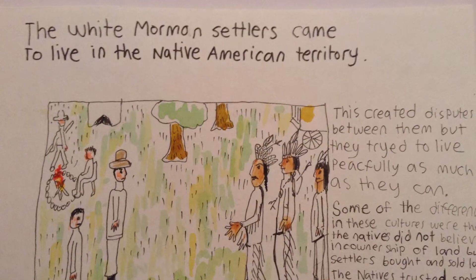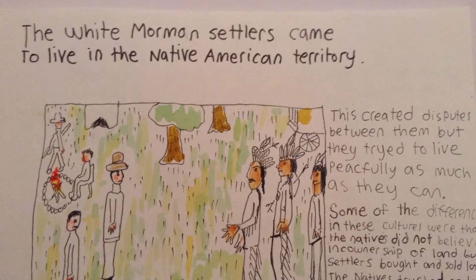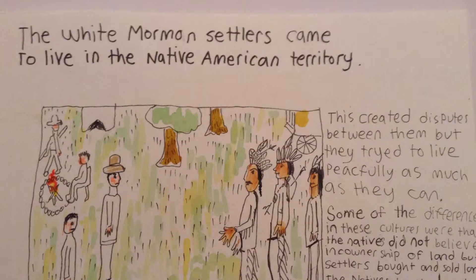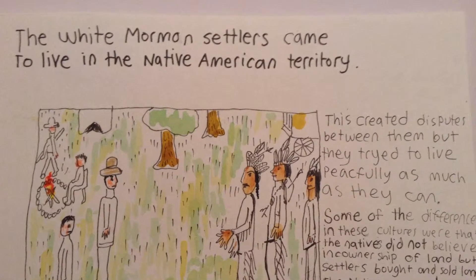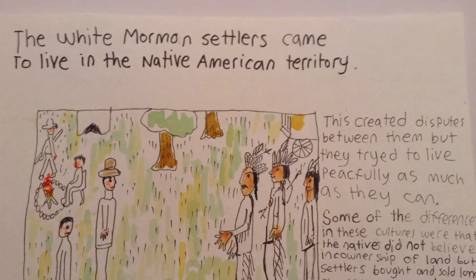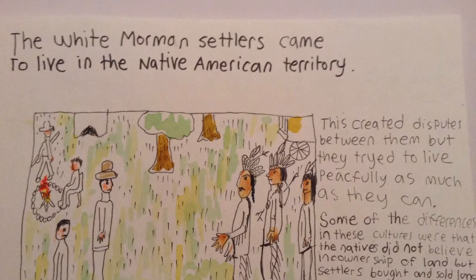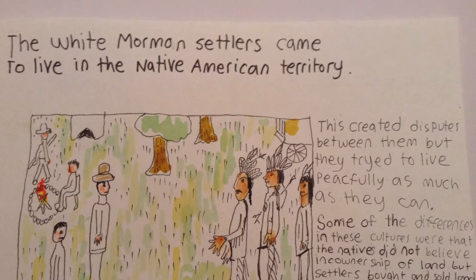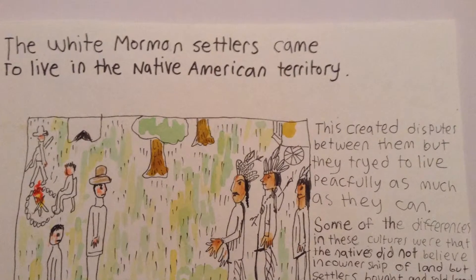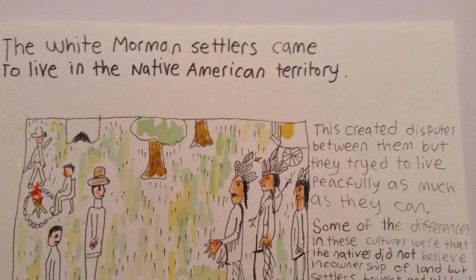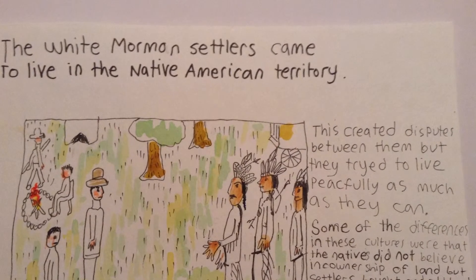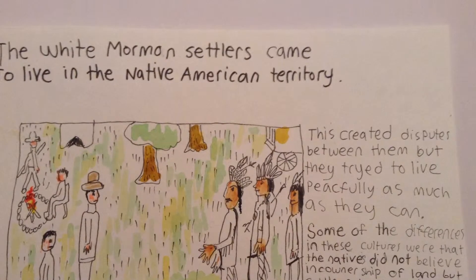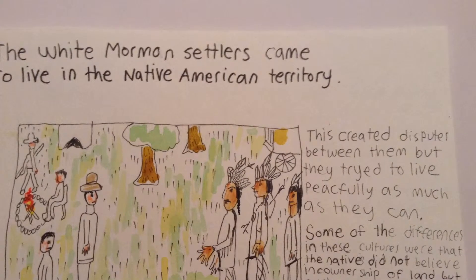The white Mormon settlers came to live in the Native American territory. This created disputes between them, but they tried to live peacefully as much as they could. Some of the differences in these cultures were that the natives did not believe in ownership of land, but the settlers used writing to keep promises.